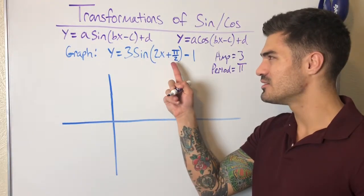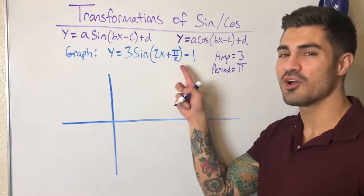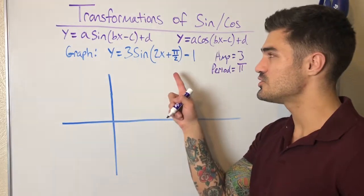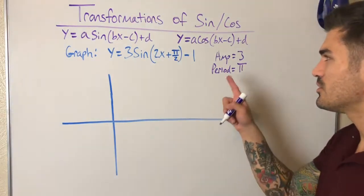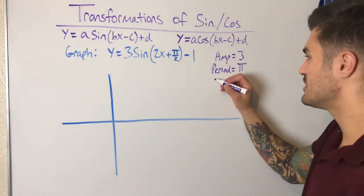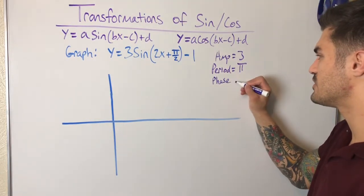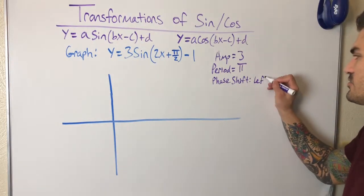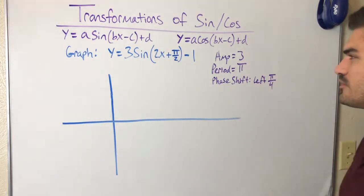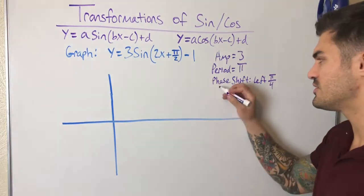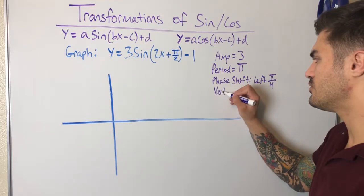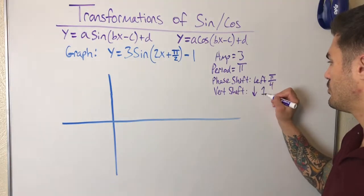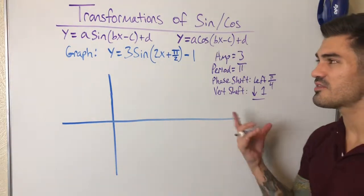We also have a phase shift. Since we're adding, we're shifting to the left — but not by pi over two. You have to divide that number by b, so pi over two divided by two gives us pi over four. So the phase shift is left pi over four. And we have a vertical shift: down one unit.